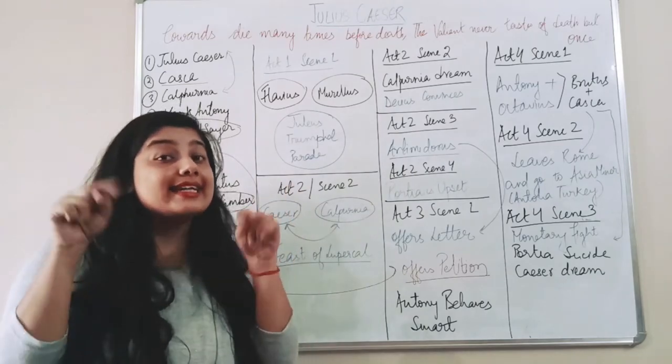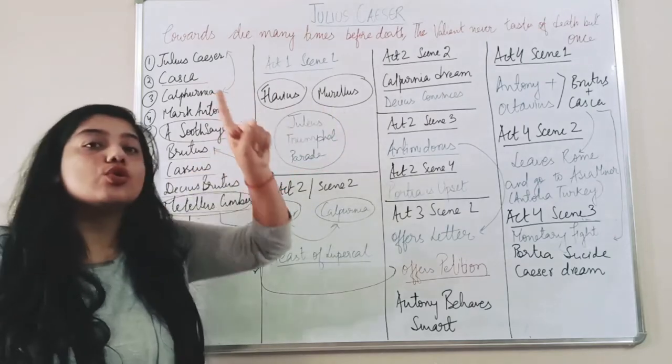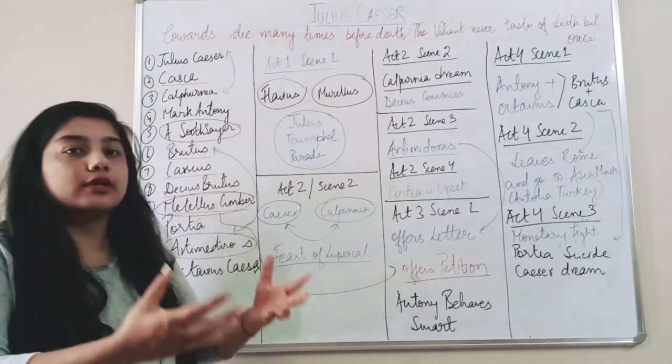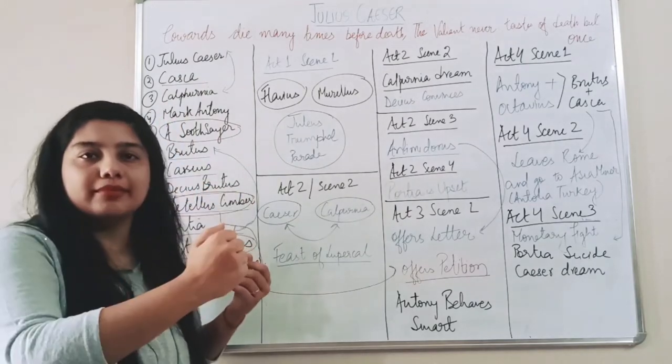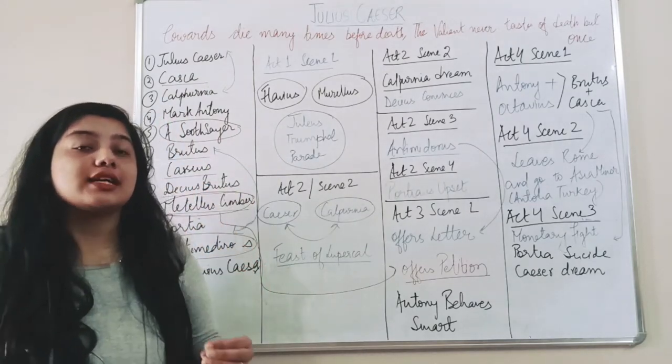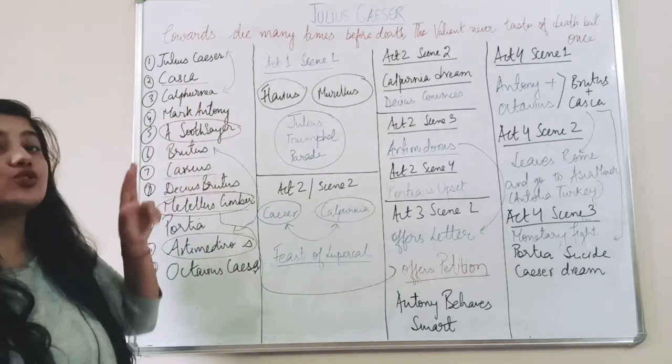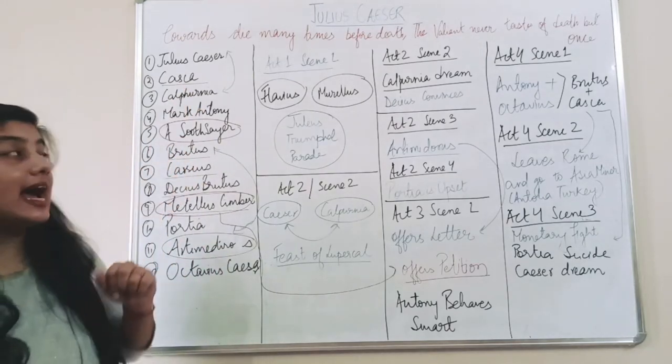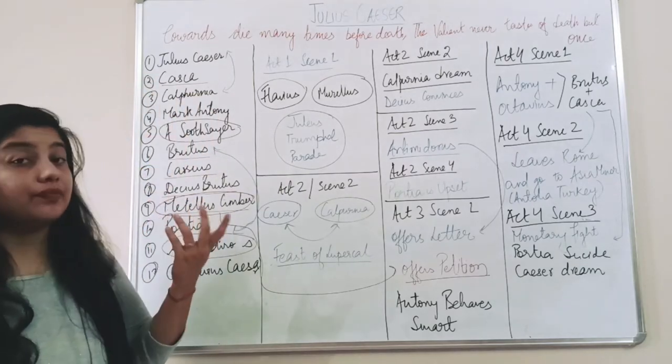But their intention was Decius Brutus wanted Caesar to go to the senate and when they will be offering him crown, all these conspirators will come and they will stab. And the most unlucky part was even Brutus, Caesar's good friend, was also involved in this.